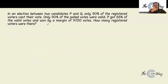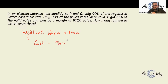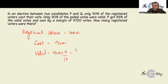Last question: In an election between two candidates P and Q, only 90% of registered voters cast their votes. Let registered voters be 100x, so votes cast are 90x. Only 90% of polled votes were valid, so valid votes are 90x multiplied by 9 by 10, which is 81x. Candidate P got 65% of valid votes — 65% as a fraction is 13 by 20 — so P got 81x multiplied by 13 by 20 votes.